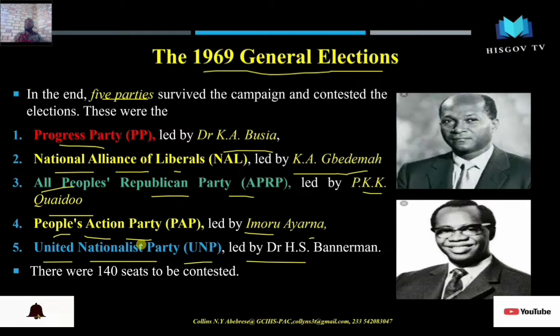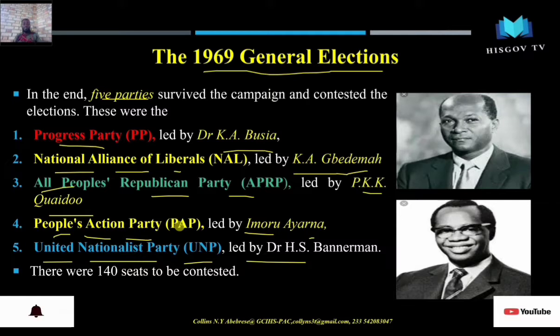Examining these five political parties, you realize the CPP — the Convention People's Party — is not to be found in the election. A party that had won three consecutive elections was not part of this fourth election. The reason was that K.A. Busia and his associates banned the CPP and never allowed it to be reformed to contest this election.